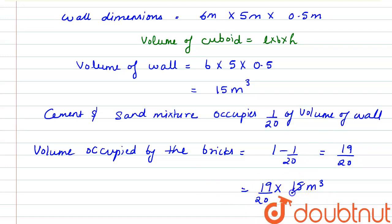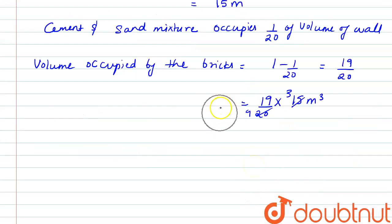So 15 and 20 is divided by 5. So we have 3 here, we have 4 here. So the volume occupied by bricks comes out to be 14.25 meter cubed.